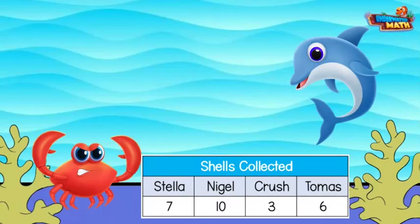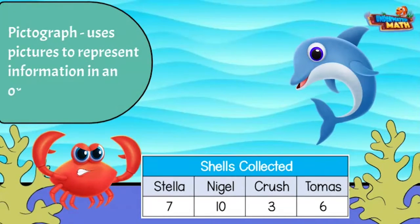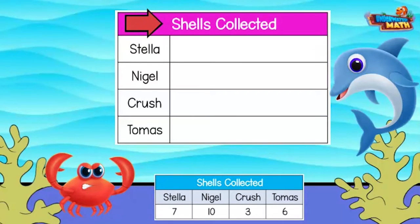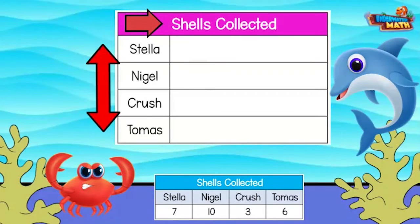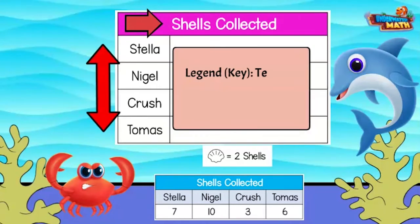A pictograph uses pictures to represent information in an organized way. Let's set up the graph. I see the title says 'Shells Collected.' The categories on the pictograph are our names. Another important part of the graph is the legend — sometimes it is also called the key. A legend or key tells us the meaning of images on a graph.